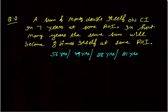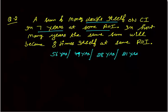The next question: a sum of money doubles itself on compound interest in 7 years at some rate of interest. In how many years will the same sum become 8 times itself at the same rate? Options are given. I will solve this question two ways: one is the conceptual way, the other is the logical way.